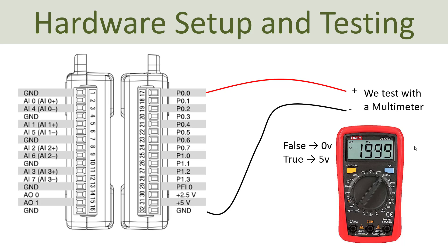Here you see a typical hardware setup which you can use to test the digital output pins on your DAC device or I/O module. You just wire from one of the digital output pins to the plus connector on the multimeter, and then use the ground pin wired to the ground connector on your multimeter. When you create a program in LabVIEW and specify either true or false, you should see either zero voltage meaning false, or five volts meaning true.